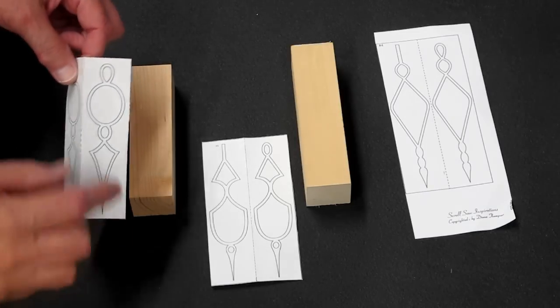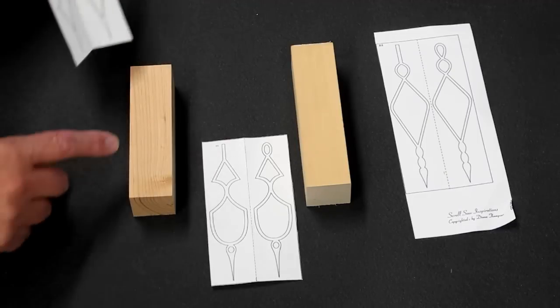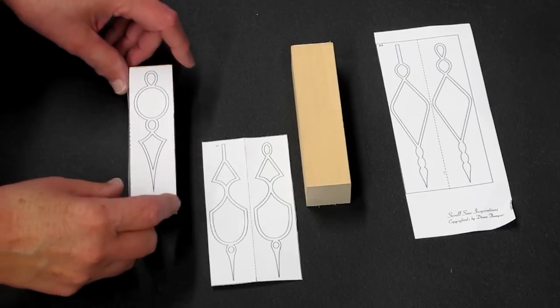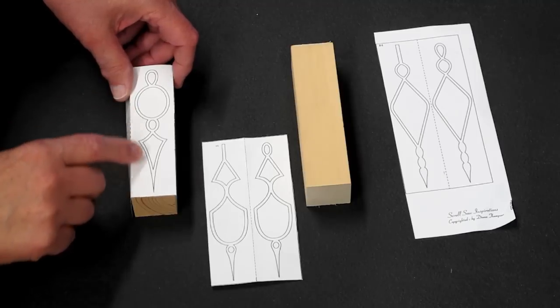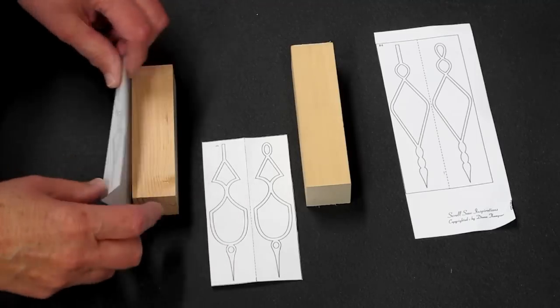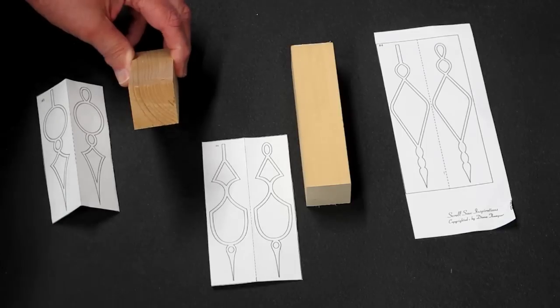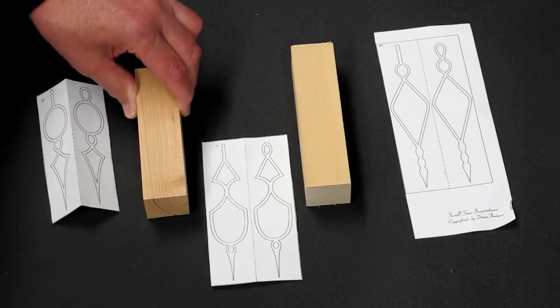You cut these out, crease them real sharp, so that edge will line up with this edge on the block. Make sure that we get these lined up square to each other. These blocks have to be absolutely square. If they're not, the pattern will not come out right.